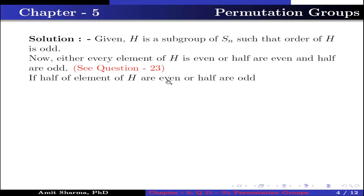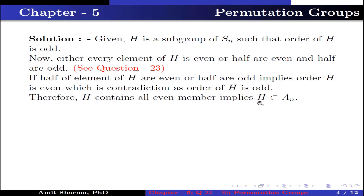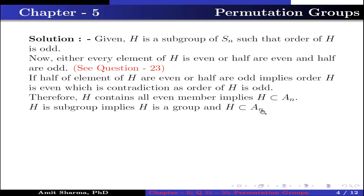If half of the elements of H are even and half are odd, this implies the order of H is even, because half the members are even and half are odd — if we count the members, it will be a multiple of two, which is even. This is a contradiction since the order of H is odd. Therefore, H contains all even members. This implies H is contained in AN, because AN is the alternating group — the group of all even permutations. Since H is a subgroup and H is contained in AN, this implies H is a subgroup of AN.